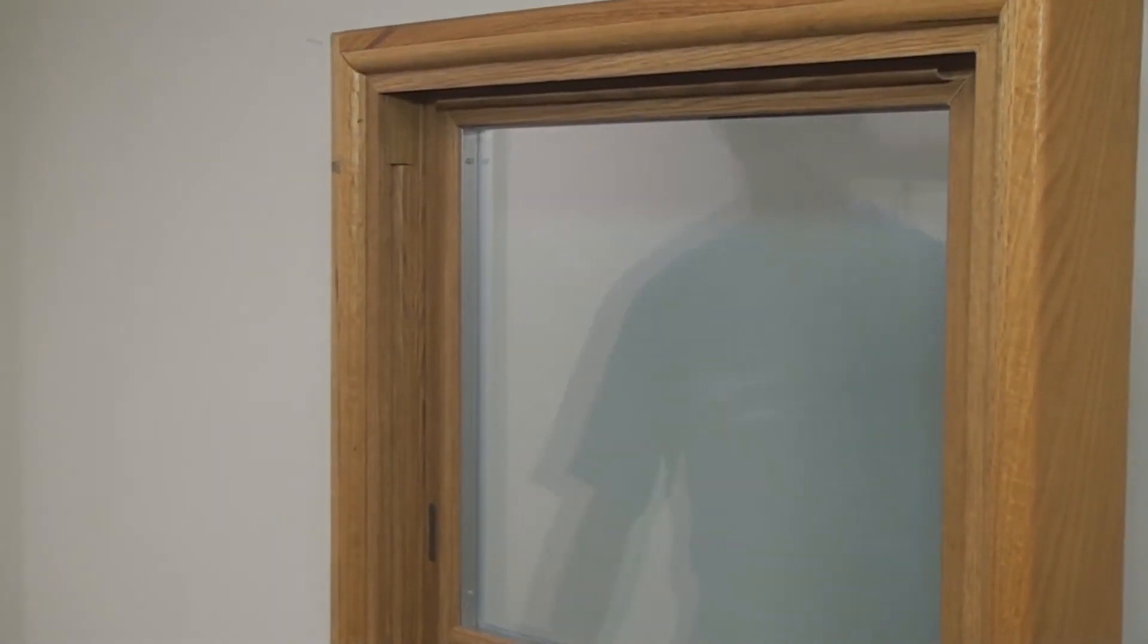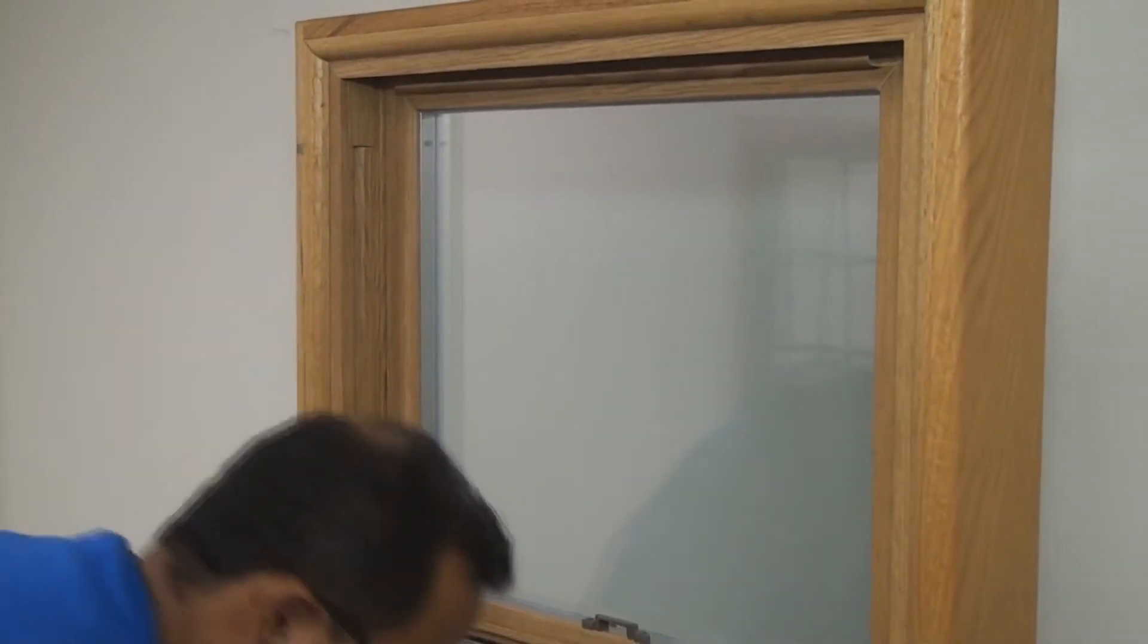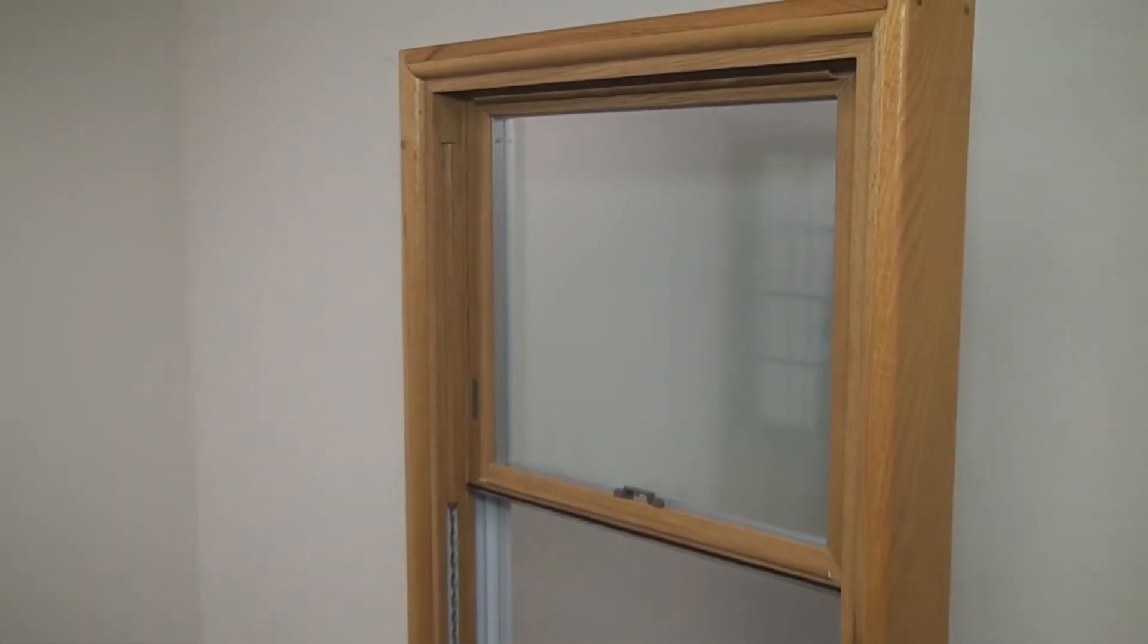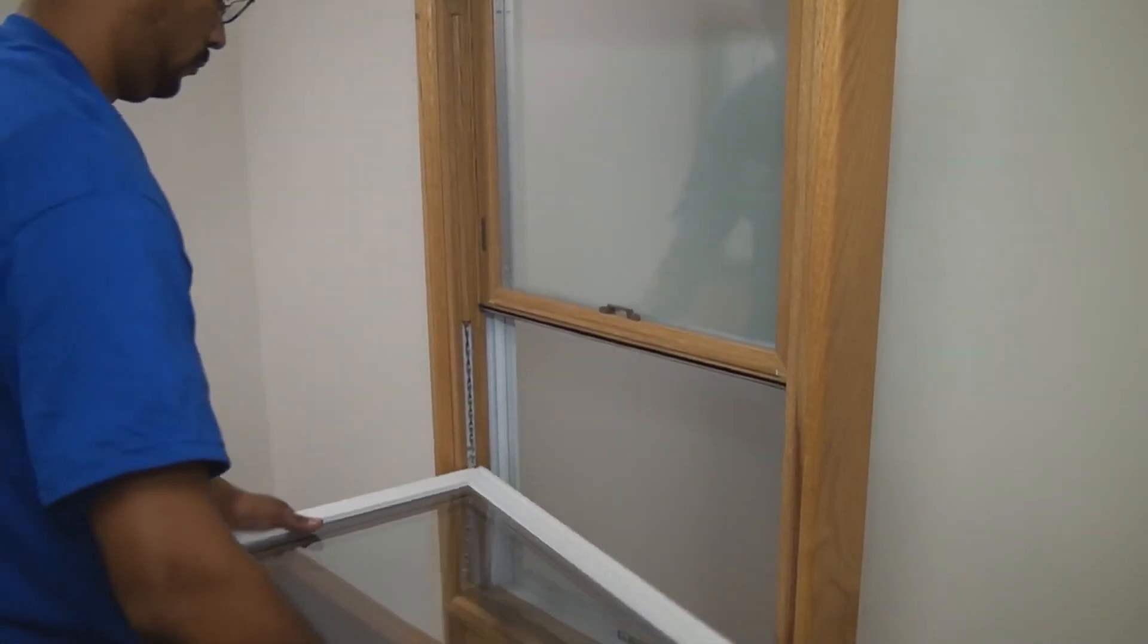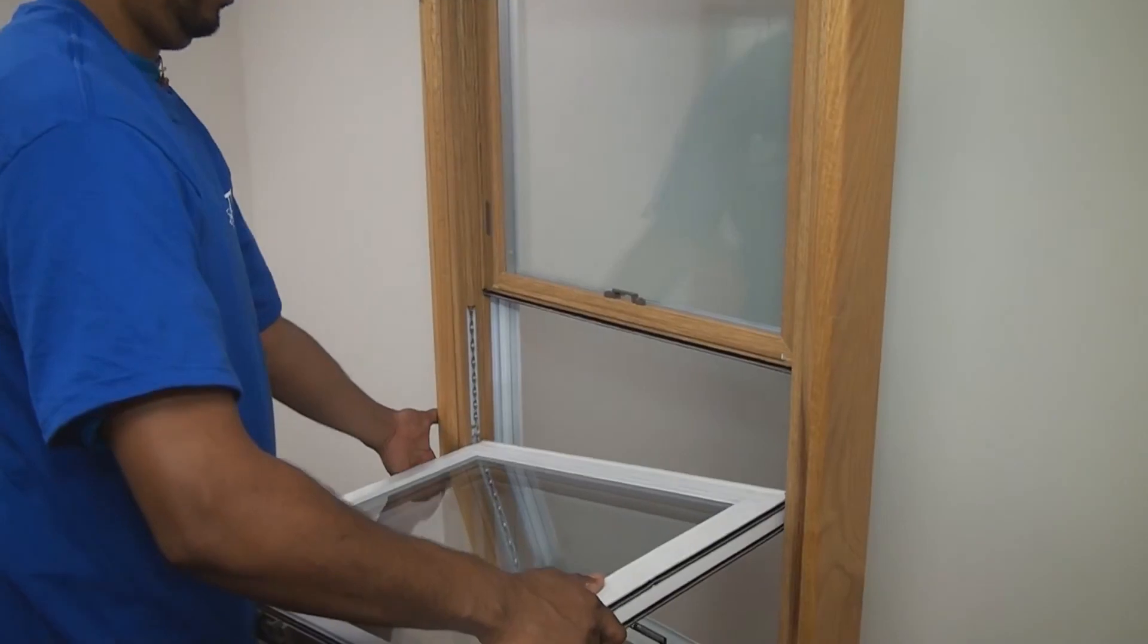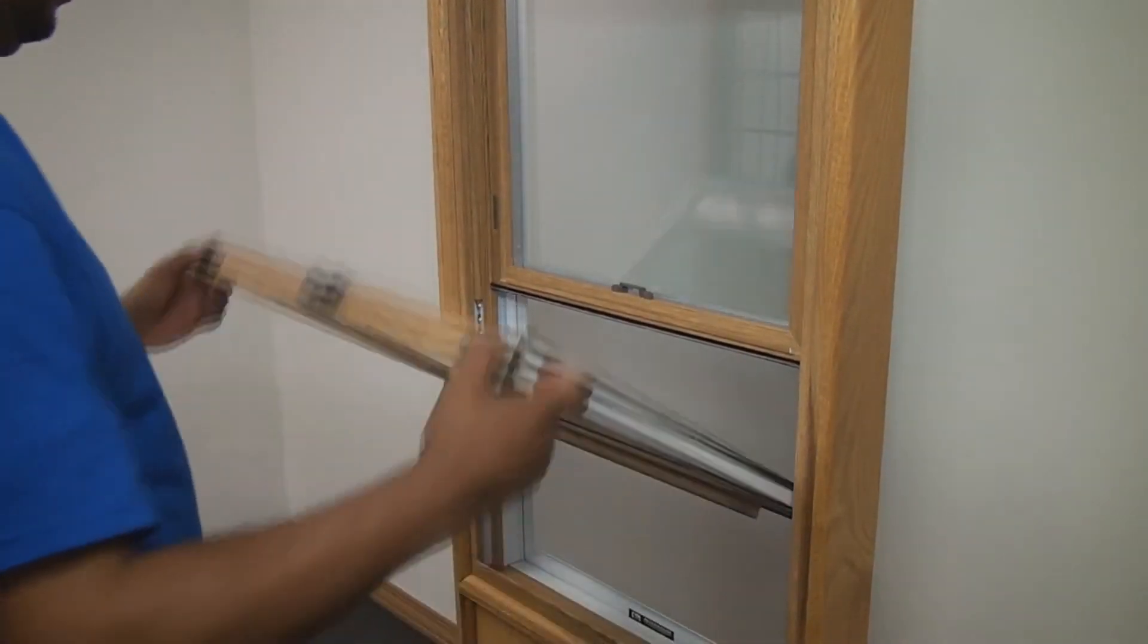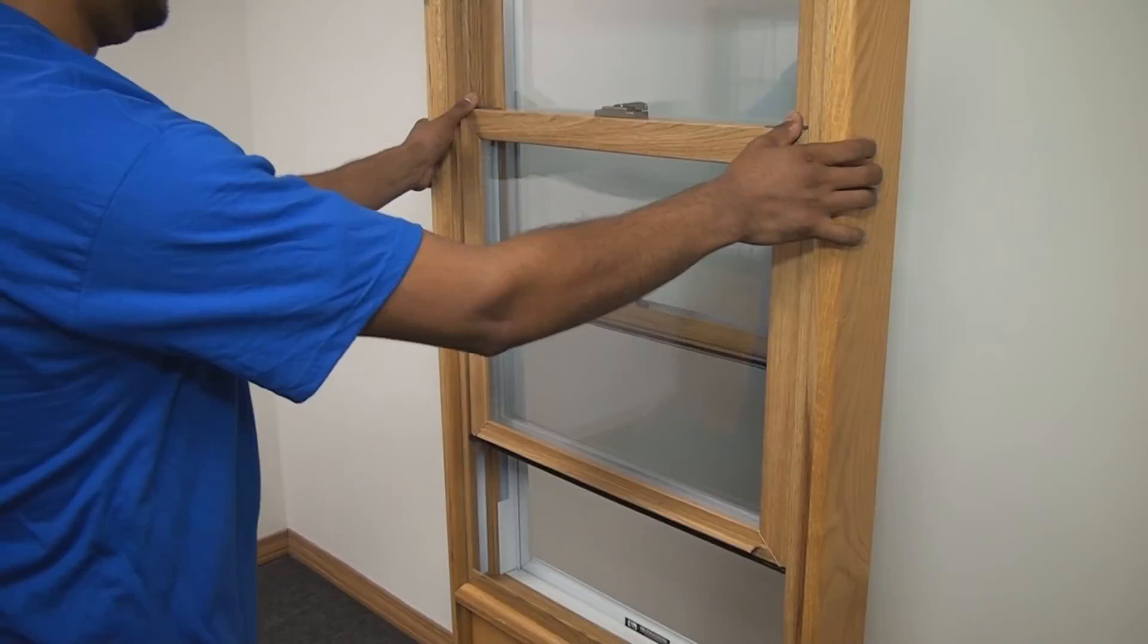Once you are done making adjustments, put the sash back into the window. Start by placing the peg on the left side of the sash into the shoe first, then the right side. You will have to pull up on the right side. Once the sash is level, close the sash.